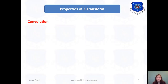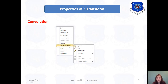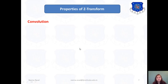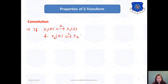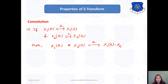Next is the convolution property. Remember that convolution in the discrete time domain is equivalent to multiplication in the Z-domain. That means if the Z-transform of x1(n) is X1(z) and the Z-transform of x2(n) is X2(z), then the Z-transform of x1(n) convolved with x2(n) will be X1(z) times X2(z). So convolution in the time domain equals multiplication in the Z-domain.